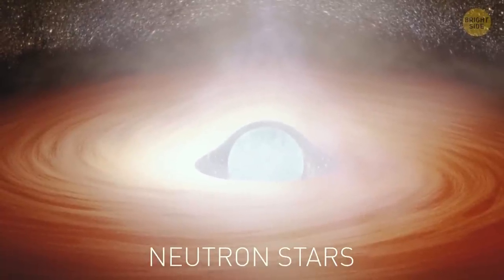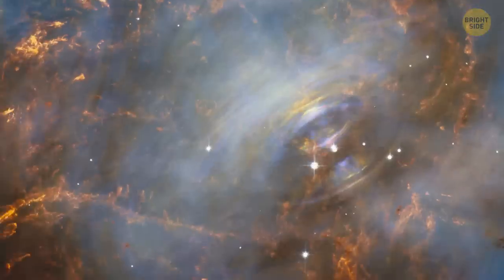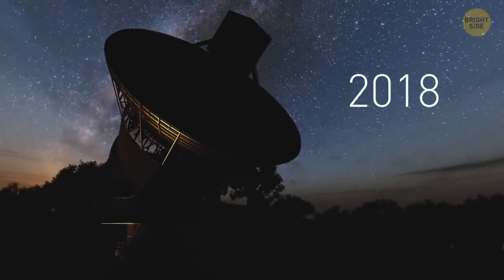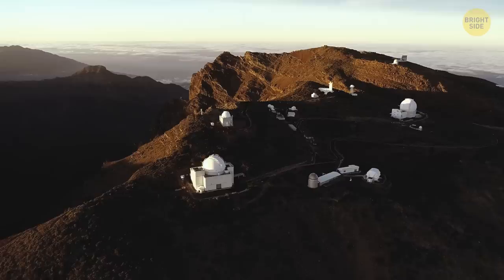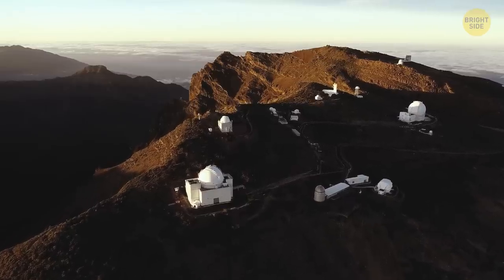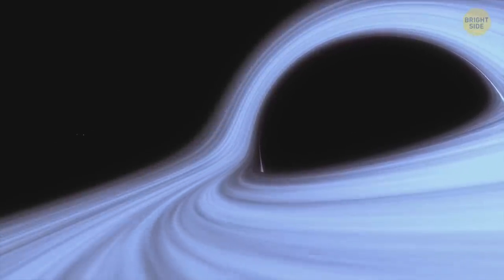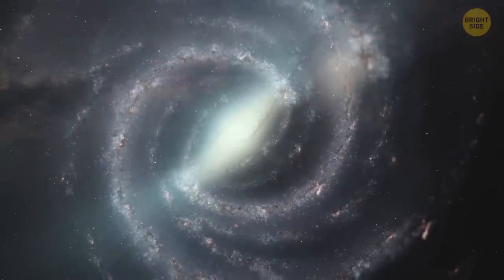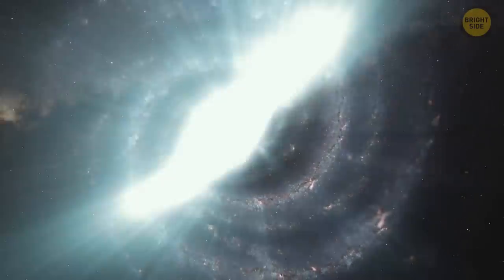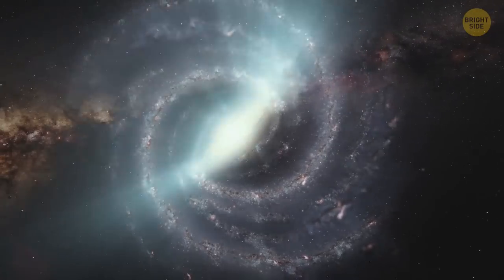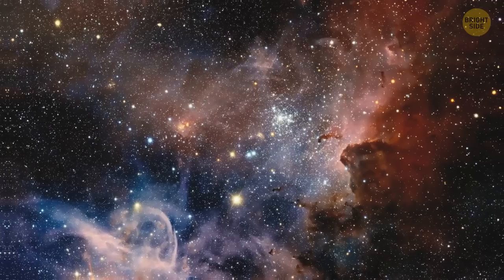Neutron stars are ultra-dense collapsed cores of giant stars. They emit X-rays or radio waves. But in 2018, astronomers discovered a weird stream of infrared light. It seemed to be coming from a neutron star 800 light-years away from our planet. The most plausible theory is that this signal was probably produced by a disk of dust surrounding the star. But there isn't enough evidence to confirm this idea.